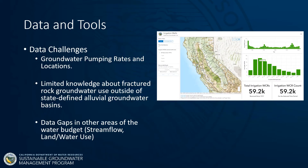Some of the data challenges we have are related to groundwater pumping rates and locations, limited knowledge about fractured rock groundwater use outside of the state-defined alluvial basins, and data gaps in other areas of the water budget that relate to groundwater, such as land use and stream flow.